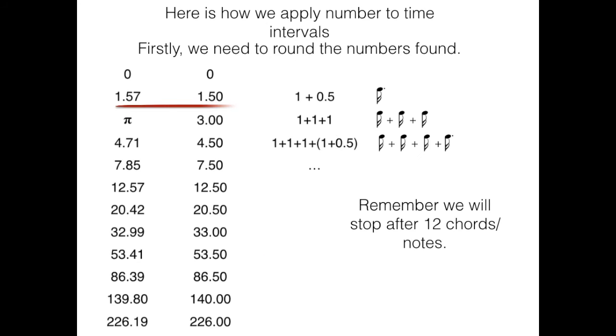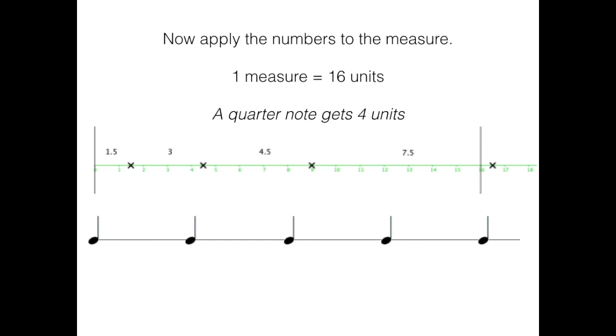For example, the first arc, which equals 1.57, will be rounded to 1.50, which equals to a 16th dotted note. The second arc, which is pi, will be rounded to 3.00, which equals to three 16th notes. Now we apply the numbers to the measure. One measure equals 16 units. A quarter note gets four units.